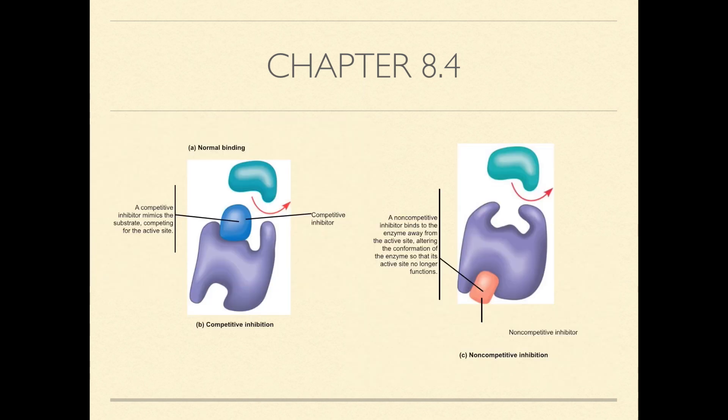Enzymes are inhibited by competitive and non-competitive inhibition. Competitive inhibition is where the inhibitor mimics the substrate, competing for the active site while the non-competitive inhibitor binds to the enzyme away from the active site, causing the real active site to no longer function.